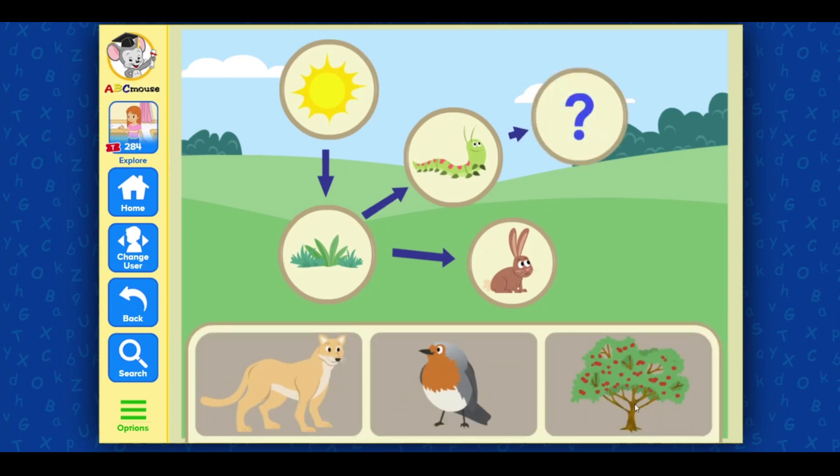This eats insects, worms, berries and seeds. Awesome job! The robin does eat insects, worms, berries and seeds.